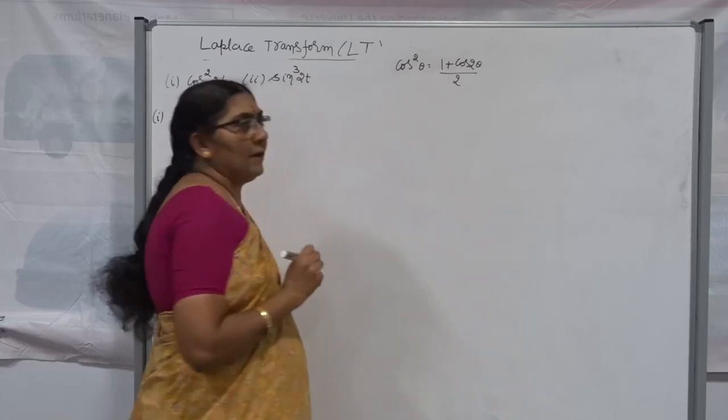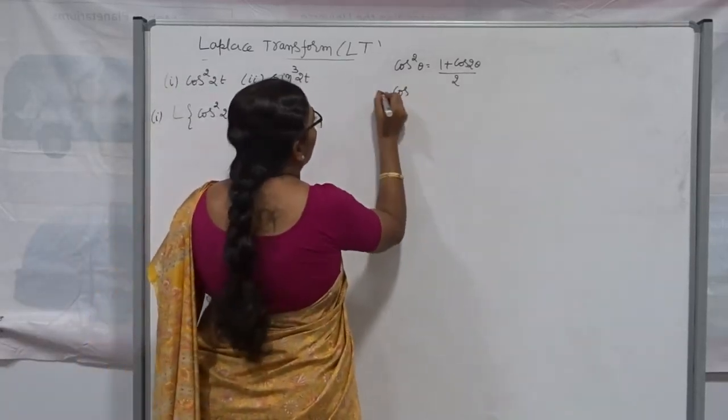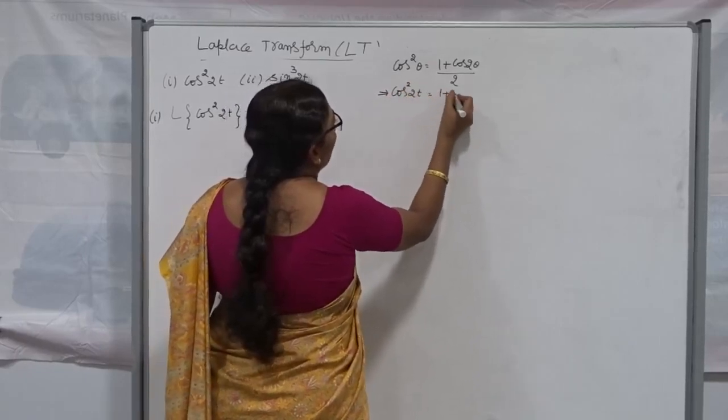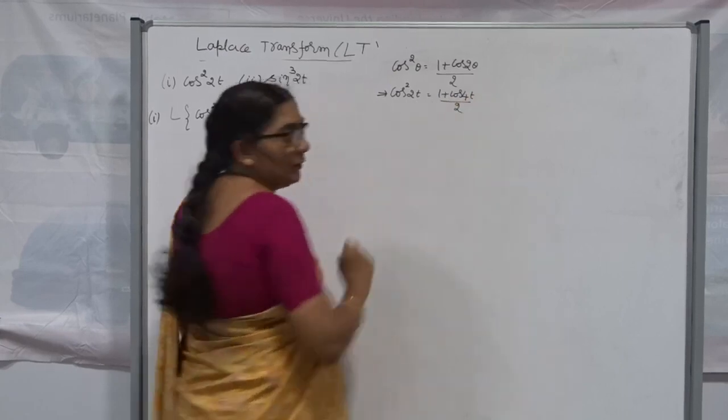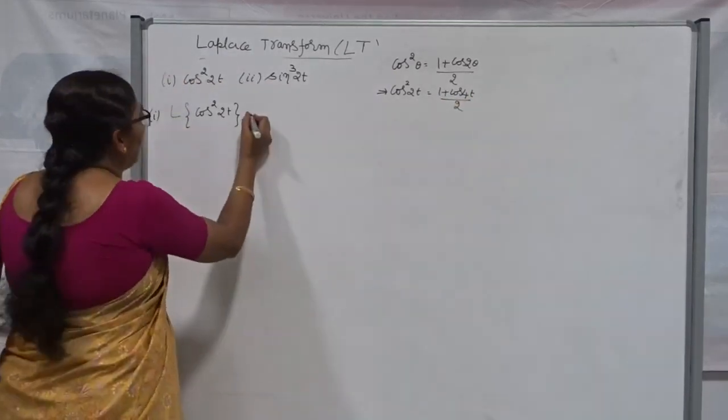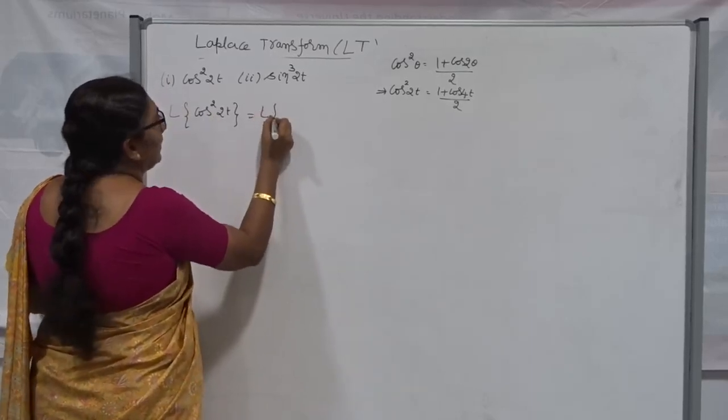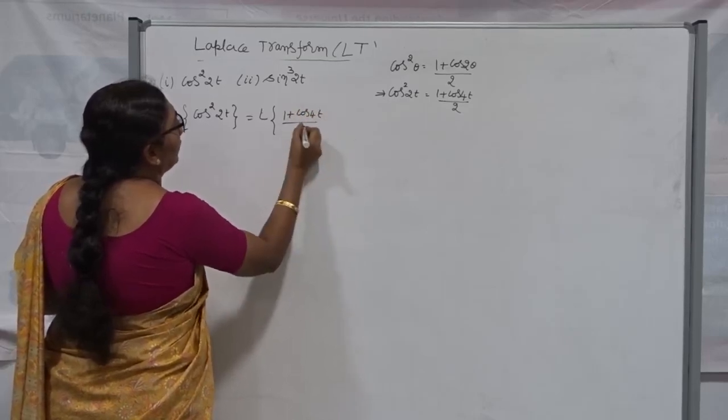Therefore, first try to simplify using fundamental trigonometric relation. You already know that cos²2t can be written as 1 plus cos2t whole divided by 2. This formula we get from cos²2t. Instead of theta what we have here, cos²2t is nothing but 1 plus cos4t divided by 2. Therefore, this cos²2t can be written as Laplace Transform of 1 plus cos4t divided by 2.